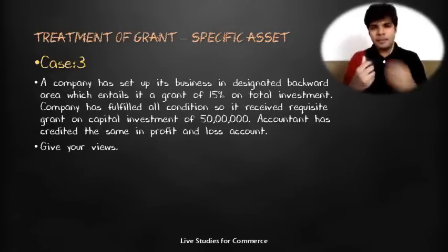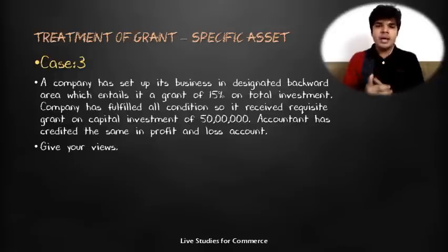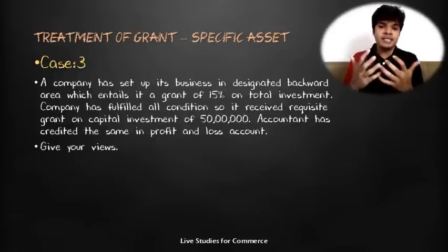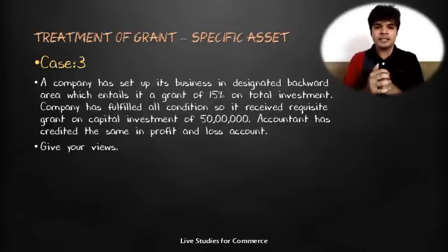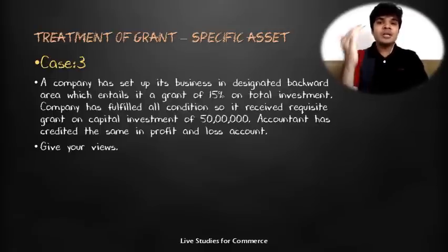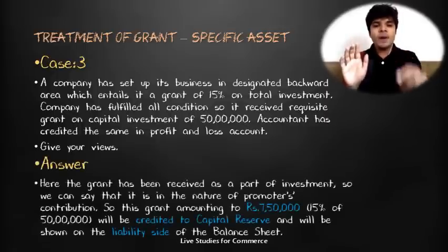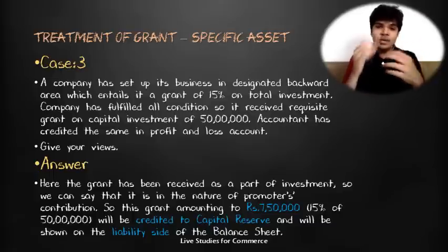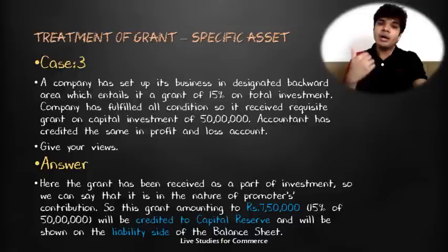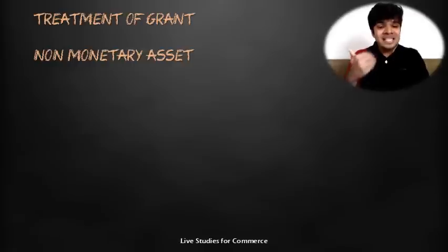Let's understand promoter's contribution grants with a practical case. A company set up its business in a designated backward area, entitling it to a grant of 15% of total investment of ₹50 lakhs, and fulfilled all conditions. The accountant credited the grant to profit and loss account. This is incorrect — 15% of ₹50 lakh = ₹7.5 lakh should be credited to capital reserve and shown on the liability side as part of shareholders' funds. Any other treatment would be wrong.